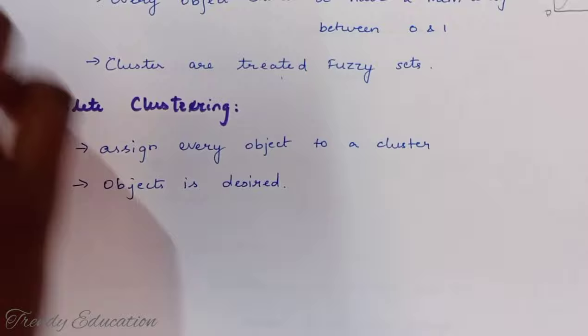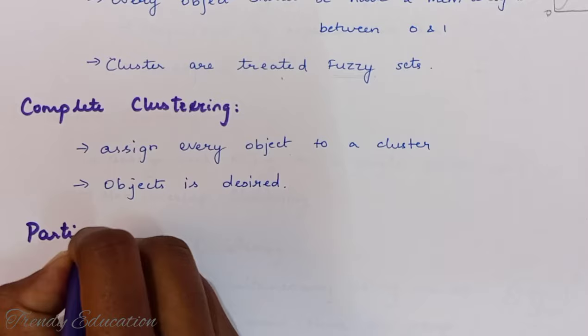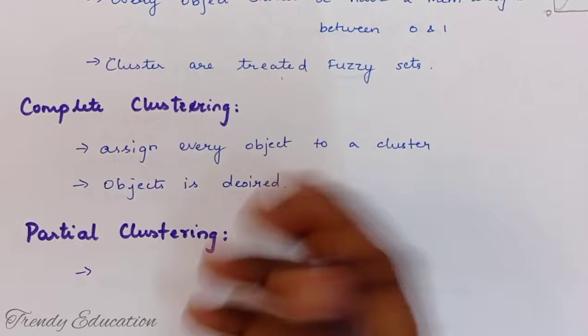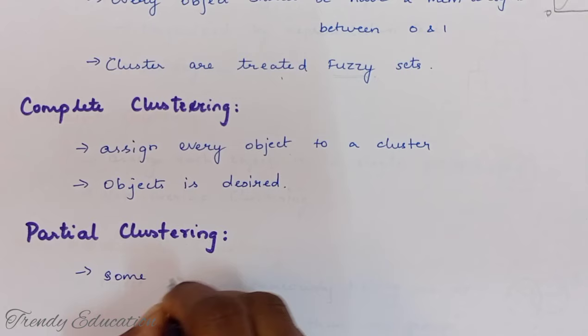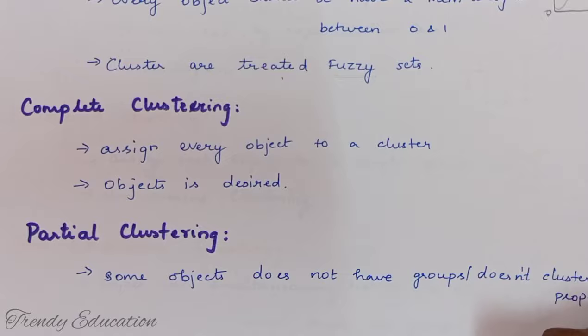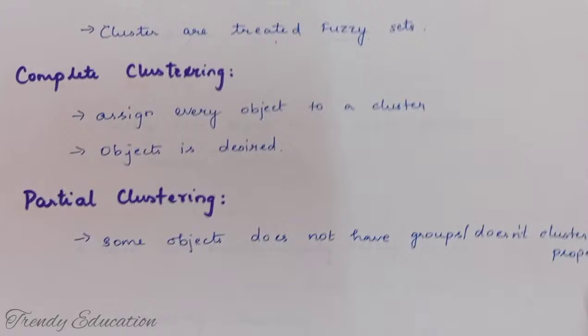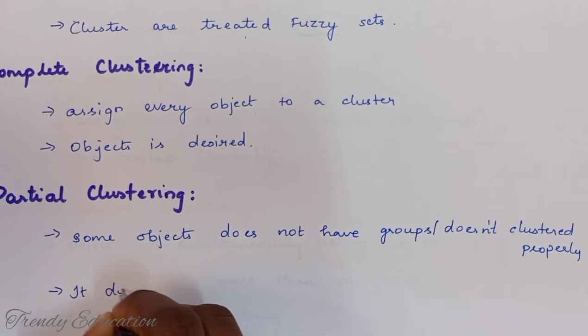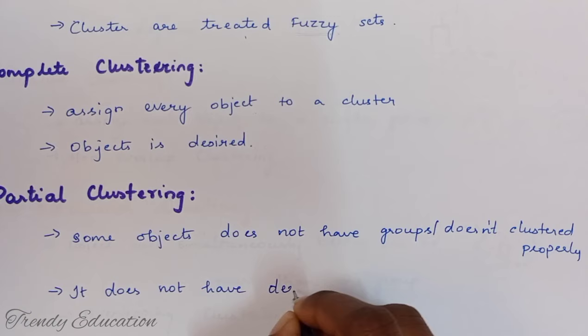Now coming to the last type, which is partial clustering. Partial clustering is exactly the opposite of complete clustering — there are some data objects which might be left unclustered. The main reason for this is background noise or error data, which is why some objects are not assigned to any cluster. It does not have all desired objects because there are some leftover objects.